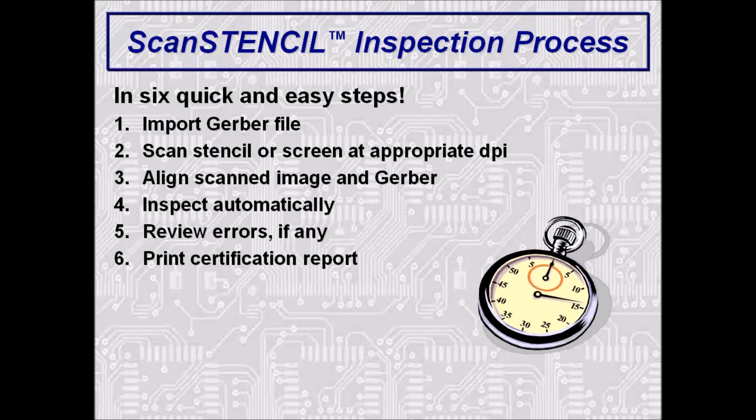Stencil inspection can be performed in six quick and easy steps. First, import the Gerber data or CAD data. Next, scan the part to be inspected. Then automatically align the scanned image to the Gerber data. Perform an automatic inspection with the required tolerance. The operator can then view any defects, zooming in and out if necessary — each defect is clearly numbered and presented in sequence. Ideally, there are no errors, so a certification report can be printed for shipment with the stencil. Now let's see the ScanStencil system in action.